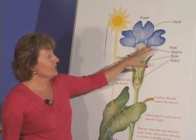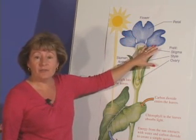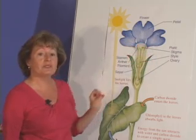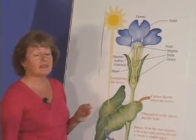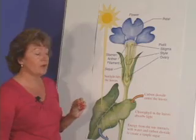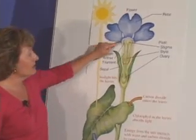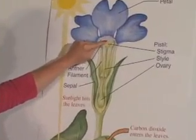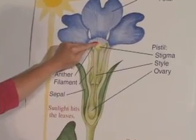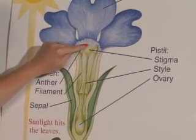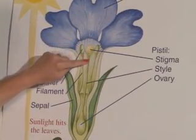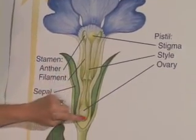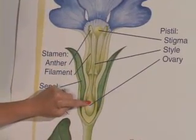Next is the female part of the flower, called the pistil. The pistil is comprised of three things: the stigma, the style, and the ovary. The stigma is the uppermost part of the pistil, usually where the pollen lands — the part of the flower to be pollinated. The pollen then travels down the style into the ovary, where the seed is formed.